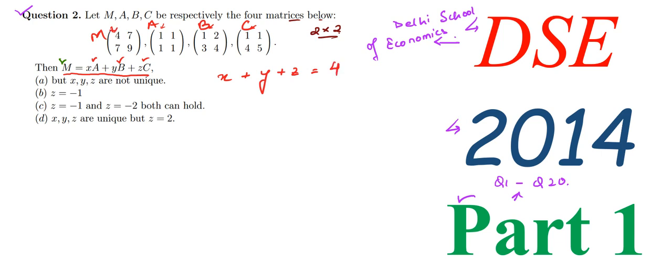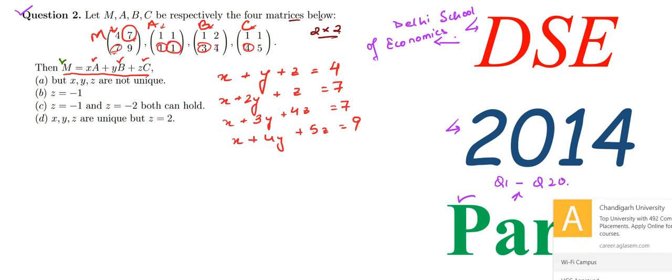Similarly, we will write all of these equations. The second equation will be x plus 2y plus z equals 7, which is here. The third equation is x plus 3y plus 4z equals 7. As you can see, here we have x, here we have 3, and here we have 4, and this one is 7. The fourth equation will be x plus 4y plus 5z equals 9. So we have found all four equations.